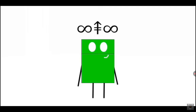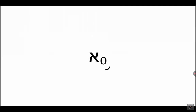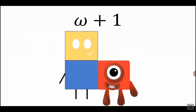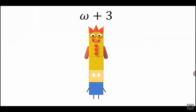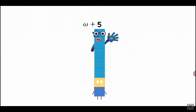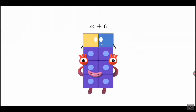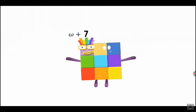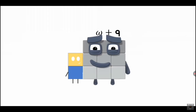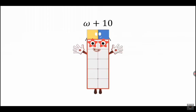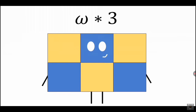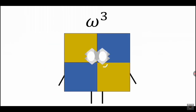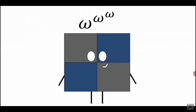Infiniteites. In the omega cardinal gap. Omega, omega, omega, omega, omega — omega times two, times three. Omega squared. Omega cubed. Omega to the omega. Omega to the omega.